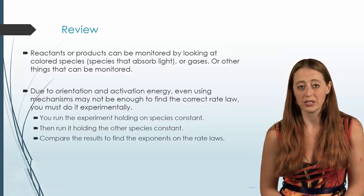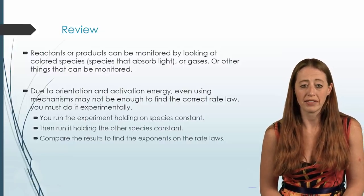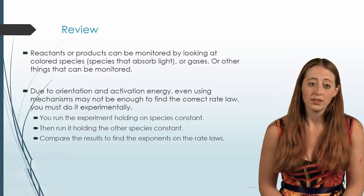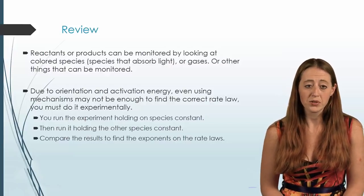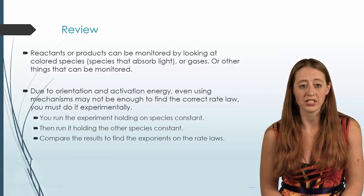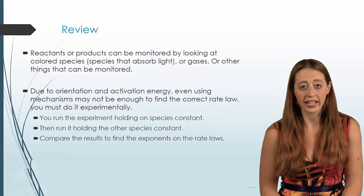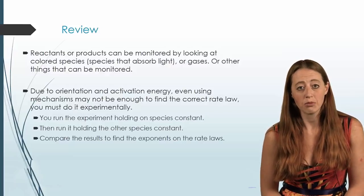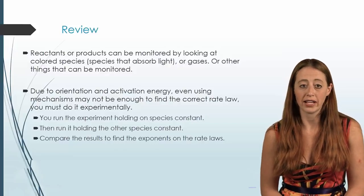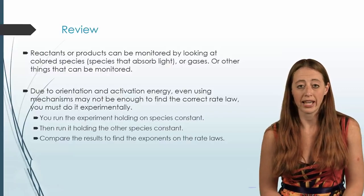So due to several different factors, whether it be orientation or activation energy, or a variety of things, sometimes the mechanisms still don't fully explain the reaction rate. And so to do this, we have to, and adjust for this, we have to run the actual reaction. And we will do this several times at varying concentrations, each time holding one of the reactants constant, to be able to solve for a final reaction mechanism that has the proper exponents and the proper K.